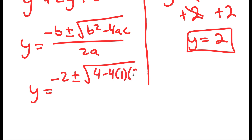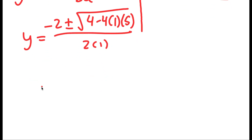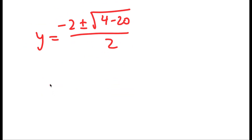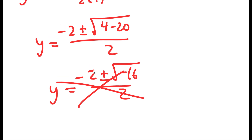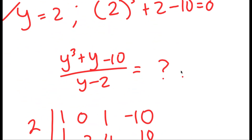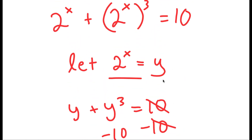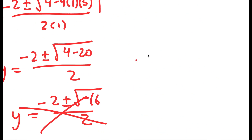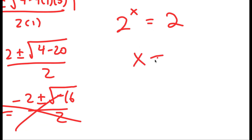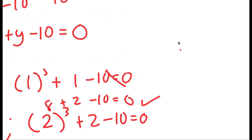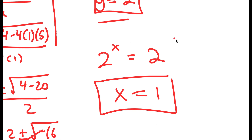Continuing: minus 4 times 1 times 5, all over 2 times 1. This turns to negative 2 plus or minus the square root of 4 minus 20 over 2, which equals negative 2 plus or minus the square root of negative 16 over 2. Because we have the square root of a negative number, we cannot use those solutions of y, meaning we can only use y equals 2. And remember, we're solving for x, not y. We let 2 to the power of x equal to y, so I have 2 to the power of x is equal to 2. The only solution is x equals 1, because 2 to the power of 1 equals 2. So x equals 1 is my solution to this equation.